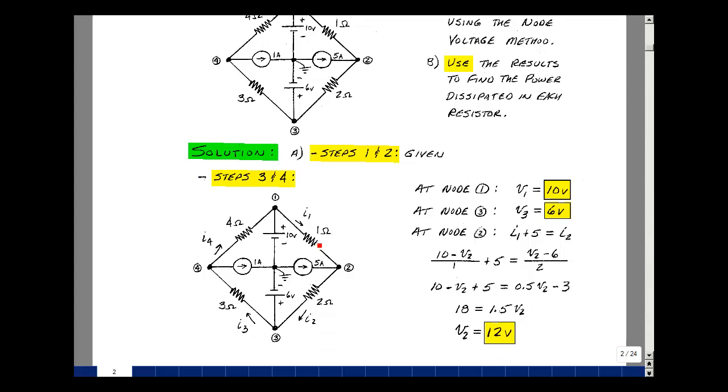Let's do Kirchhoff's current law at node 2. The current that enters is I1 plus 5, and what's leaving is I2. What's I1 equal to? It's equal to this node voltage minus this node voltage, which would be 10 minus V2 divided by 1 ohm, and of course, we have the 5 amps also entering.